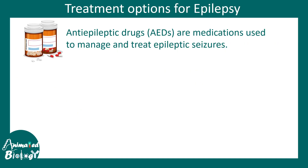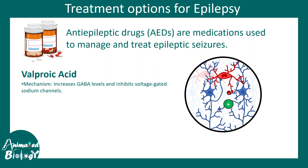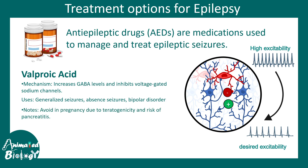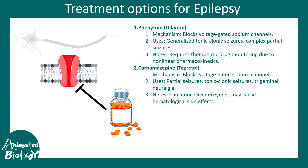Regarding anti-epileptic drugs, one drug is valproic acid, which increases GABA levels and thereby increases the inhibitory drive in the circuit, toning down higher excitability. It can be used for generalized seizures, absence seizures, and bipolar disorders, but should not be used during pregnancy. Many other drugs prescribed for epilepsy act against voltage-gated sodium channels, blocking them to prevent the symptoms of seizures.